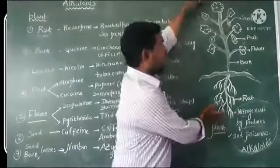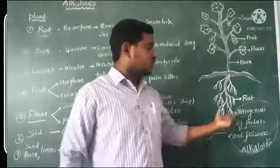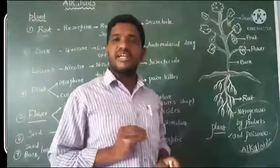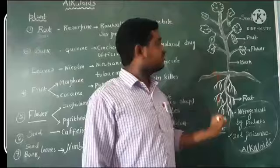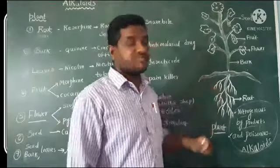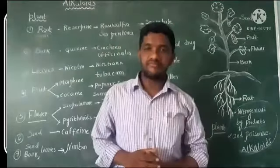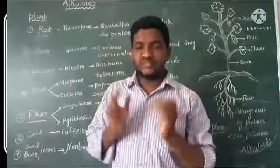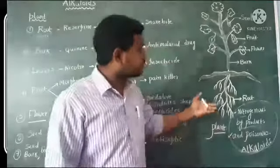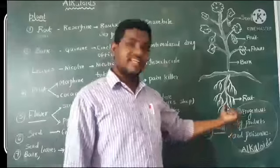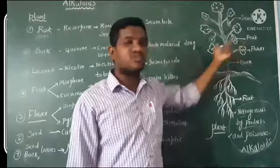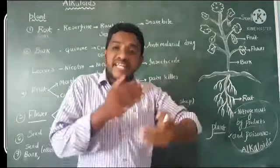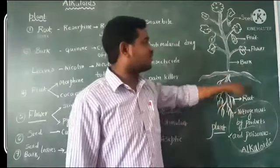A plant has different parts: root, stem with bark as the outermost layer, flower, fruit, and seeds inside the fruit. Plants store some poisonous materials — nitrogenous byproducts called alkaloids — in the root, bark, flower, fruit, and seed.